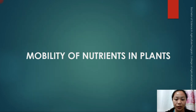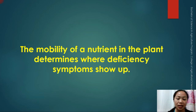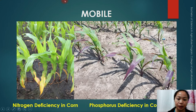Now we move forward to the mobility of nutrients in plants. The mobility of a nutrient in the plant determines where deficiency symptoms show up. For example, nitrogen is a mobile element — when the soil becomes deficient in nitrogen, the nitrogen in older leaves will move forward to the younger leaves or shoots where it is needed.